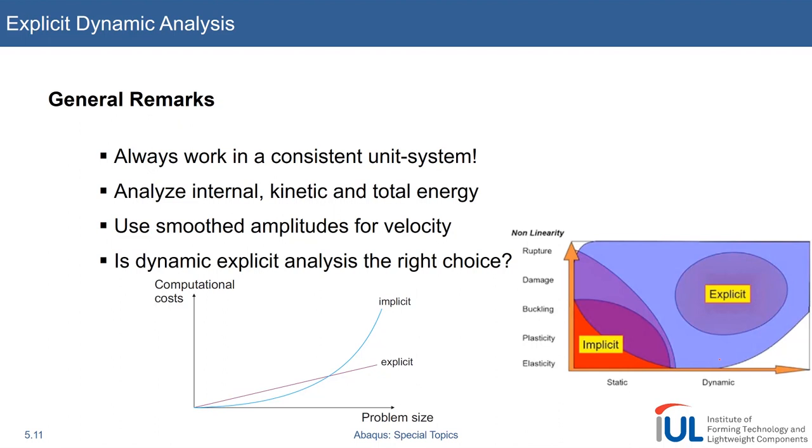What truly defines your problem? Back in the days when it was invented, people said the problem size. Basically the number of degrees of freedom. They said the bigger your problem the more likely it is that you will end up using explicit because at some point it will save you time because it scales linearly due to the lumped mass matrix and not quadratically which is due to the tangent stiffness matrix as in the implicit case. So computational costs will be very low for huge problem sizes. And this was actually true back in the days.